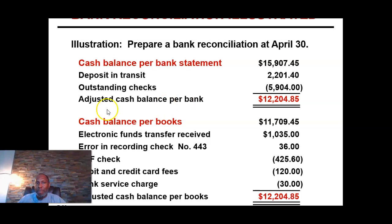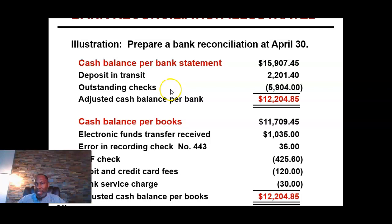We're back to our example on how to reconcile the balance shown on the bank statement against the balance shown in your cash ledger account. Those two amounts are not the same. Beginning with the balance per bank statement, you will always add your deposit in transit and subtract out your outstanding checks. I always recommend you start here first, as it has fewer transactions to get your adjusted, or true cash balance.